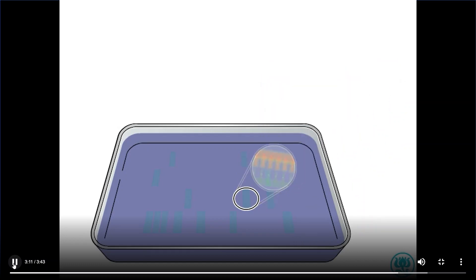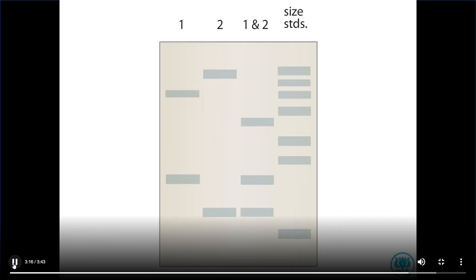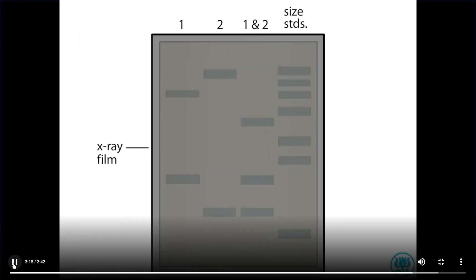The filter is washed to remove any unhybridized probe. A piece of X-ray film is placed over the filter. The radioactive probe exposes the film, revealing the locations of hybridization.